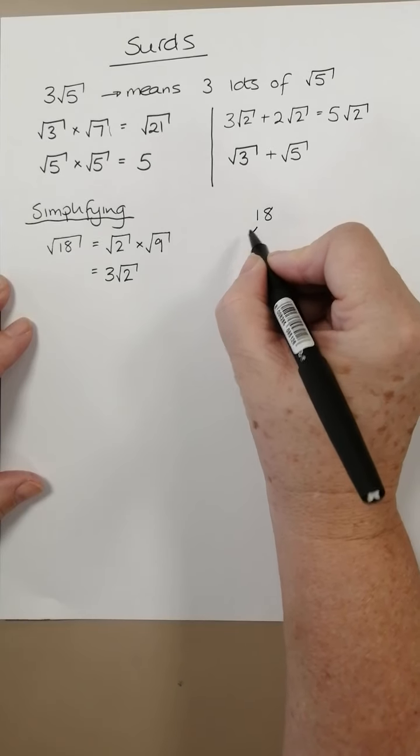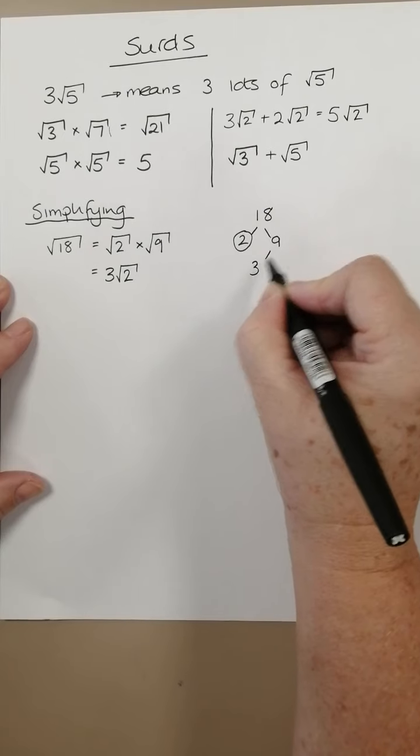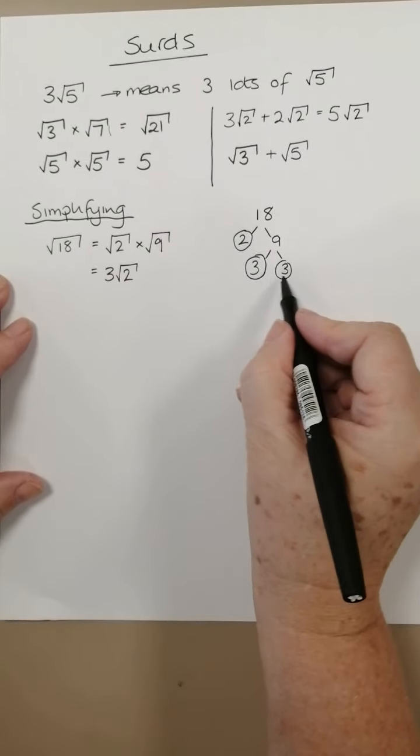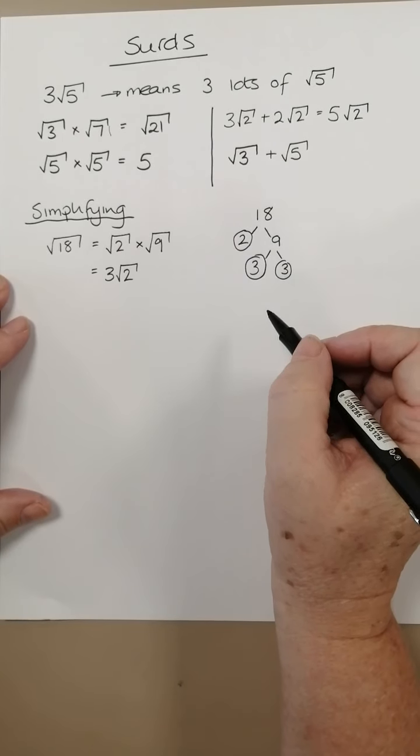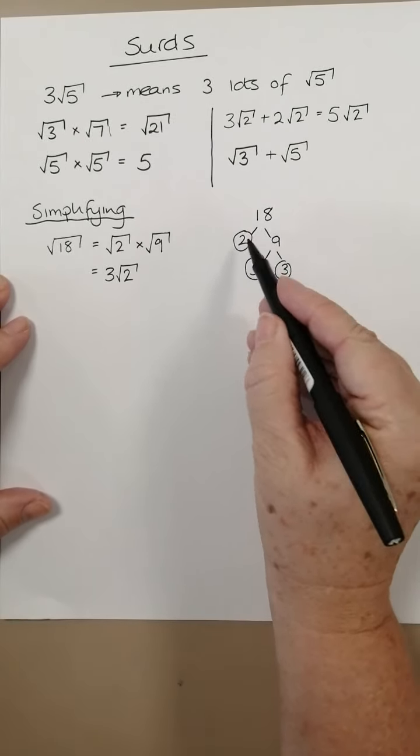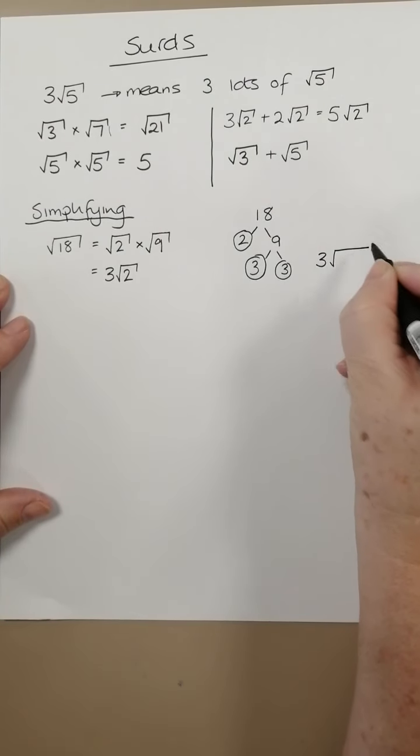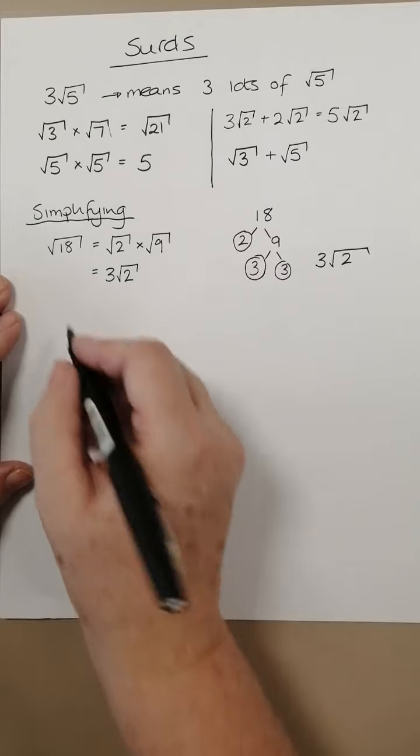The other way we could do this is we could do a factor tree for 18, so 2 times 9, 3 times 3. If you have a pair of prime factors, they can come outside the square root sign, and whatever is left goes inside the square root sign. So one of these threes comes outside, and then the two remains inside. So you can see you get the same answer, just two different ways of doing it.